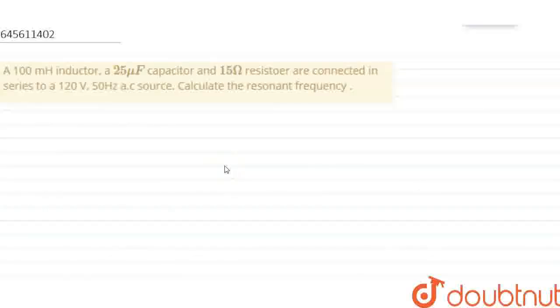Question is, a 100 mH inductor, 25 µH capacitor and 15 ohm resistor are connected in series to 120 V, 50 Hz AC source. Calculate the resonant frequency.